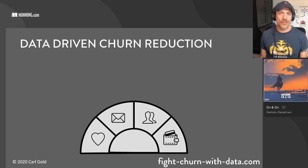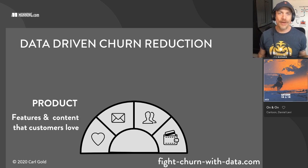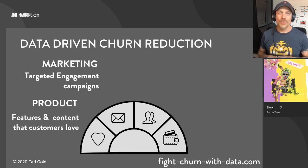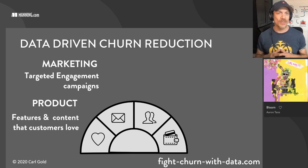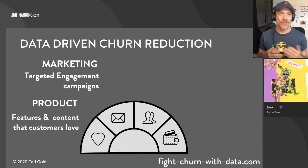Let's talk about what you actually do about churn. Churn is bad because no one wants to lose their customers, but how do you stop it? The best way to stop churn is just to have a great product — if you have a great product, your customers will stay. You can use your data to figure out the features and content your customers really love. You can also use data to re-market yourself to existing customers through targeted engagement campaigns — emails or messages that highlight the best features and content on your system. You use your data to figure out which customers need to know about which features.